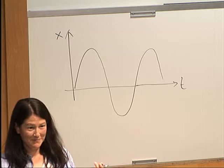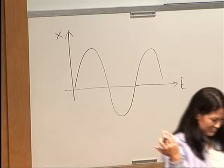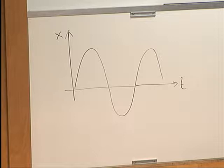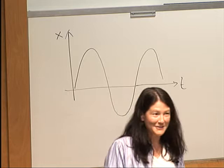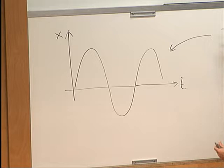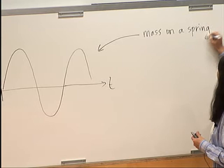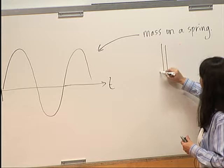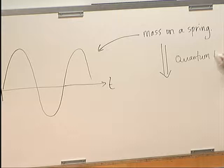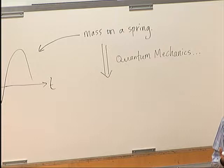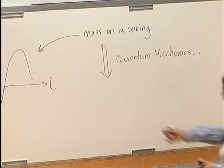If I drew something like this and said label the axes — x and t — you're saying instead of that being the electric field of a traveling EM wave, let this be like x as a function of t in a spring displacement situation — mass on spring. It's the same function of time, so somewhere underneath it must be the same differential equation. When we move over to quantum mechanics, it's all about solving those differential equations in a quantum mechanically correct way.